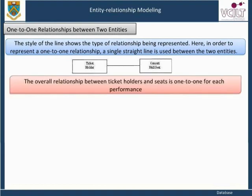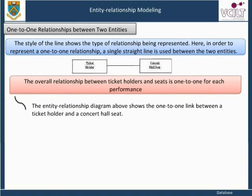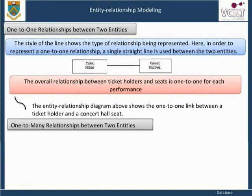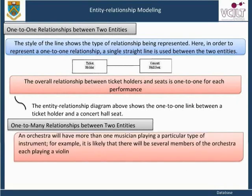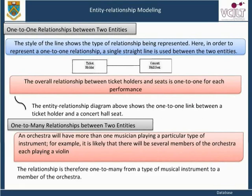The overall relationship between ticket holders and seats is one-to-one for each performance. The entity relationship diagram above shows the one-to-one link between a ticket holder and a concert hall seat. For one-to-many relationships between two entities: an orchestra will have more than one musician playing a particular type of instrument — for example, it is likely that there will be several members of the orchestra each playing a violin. The relationship is therefore one-to-many from a type of musical instrument to a member of the orchestra.